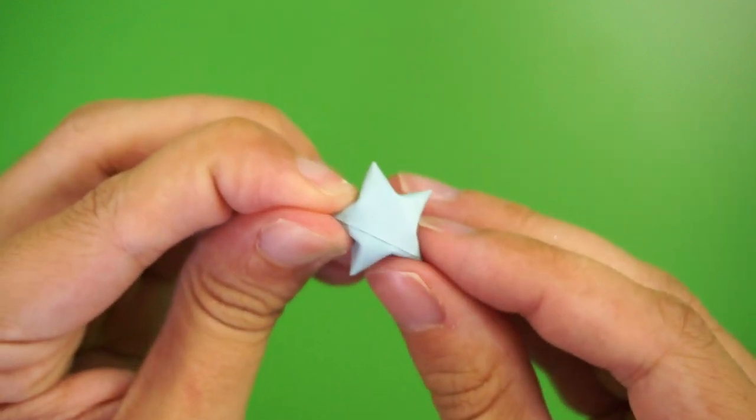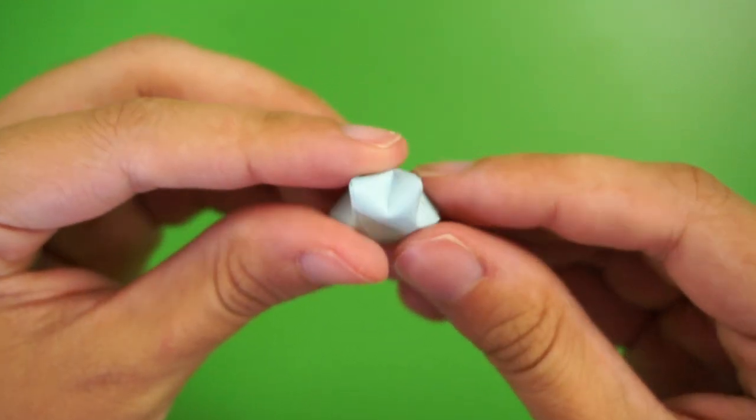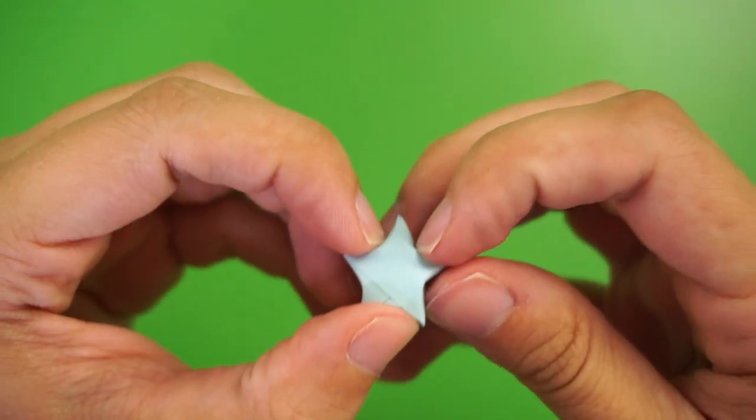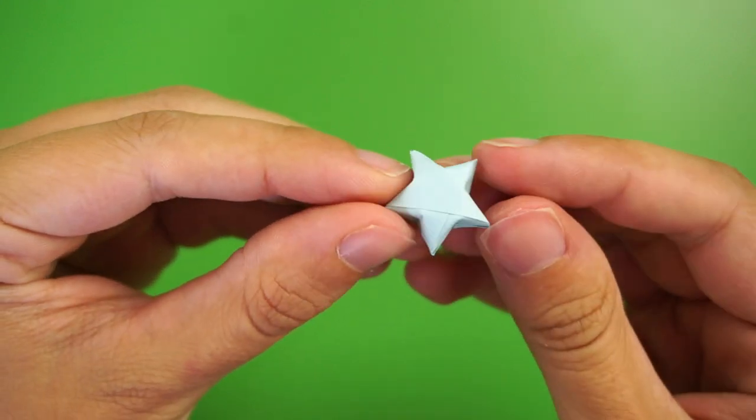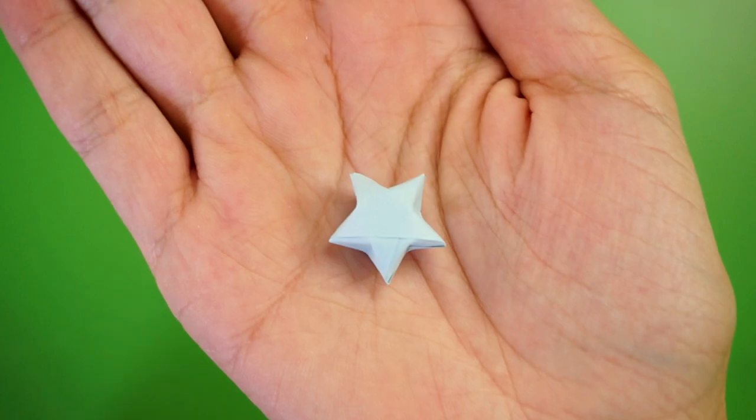The star should puff up in the middle when you do this, but it takes a bit of practice, so make a few of these to get the hang of it. I like to fix it up and pinch the corners until I get the shape just right, and then your first little paper star is finished.